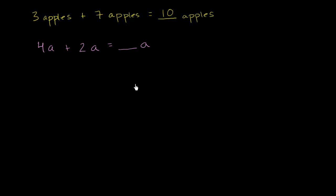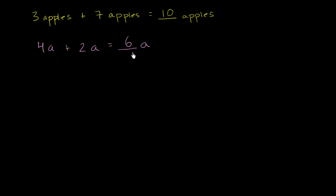If you had four of these apples, or whatever these A's represented — if you have four of them and then you add two more of them, you're now going to have six of these apples. We started off assuming A's represent apples, but they could have represented anything. If you have four of whatever A represents and then another two of whatever A represents, you'll now have six of whatever A represents. If I have four A's and then add another two A's, I'm going to have six A's.